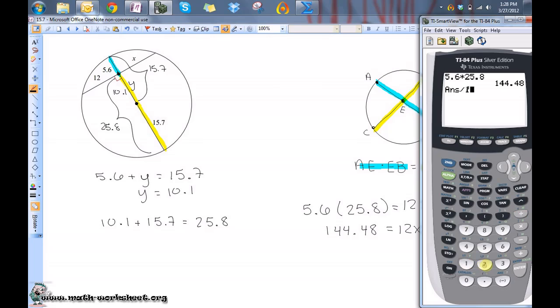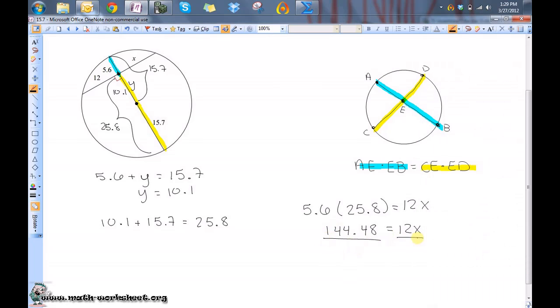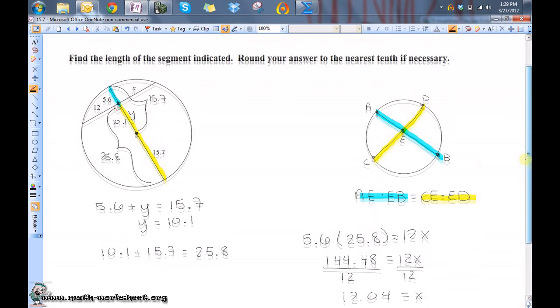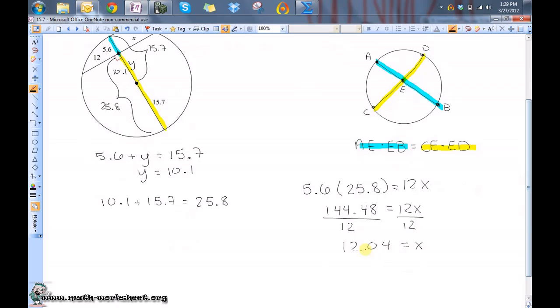So let's divide that by 12 to get what x is equal to. So 12.04 is equal to x. But it does say to round to the nearest tenth if necessary, so if we were to round this, this would round to 12.0.